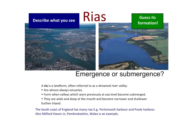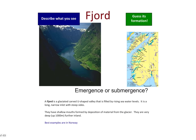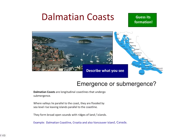Rias are landforms referred to as the drowned valley — formed when valleys previously at sea level become submerged. Portsmouth and Poole Harbour would be examples. A fjord is a glacially carved U-shaped valley filled by rising sea water levels — your best example being Norway. Dalmatian coasts are undergoing submergence where valleys lie parallel to the coast and are flooded by sea level. Vancouver Island and Croatia are really good examples.